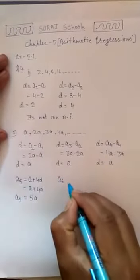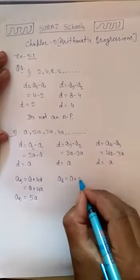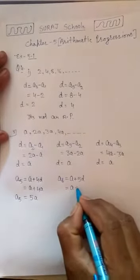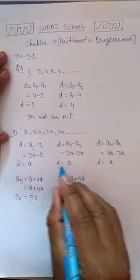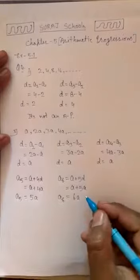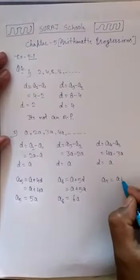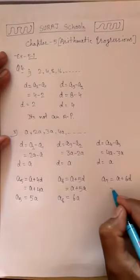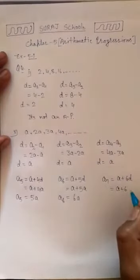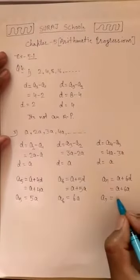Next, the 6th term: A plus (6 minus 1) times D equals A plus 5D. A is A and D is A, so A plus 5A equals 6A — that is our 6th term. The 7th term A7 equals A plus 6D equals A plus 6A equals 7A.